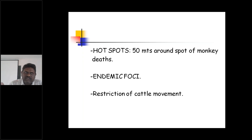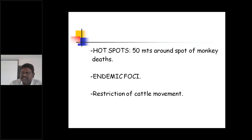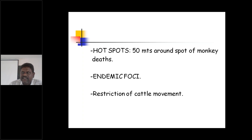So the hotspot is where a dead monkey is found. Surrounding that 50-meter area, it is considered a hotspot and the insecticide is sprayed in that 50-meter radius. That is what is done in case of hotspots.